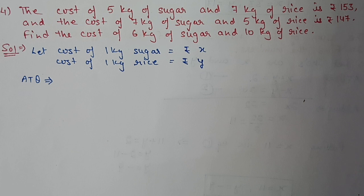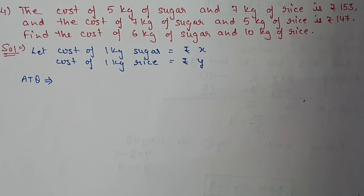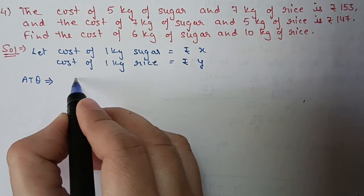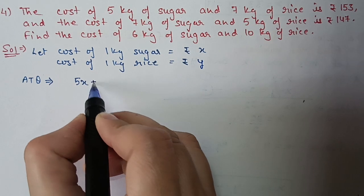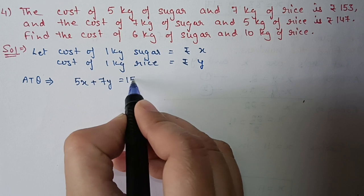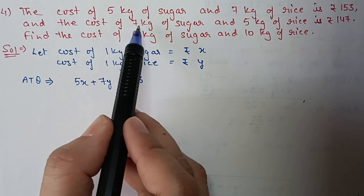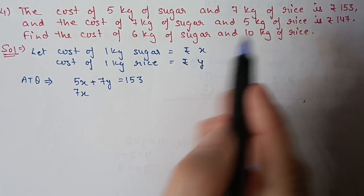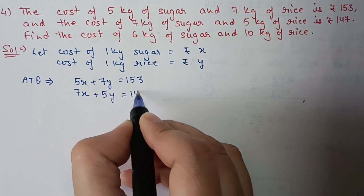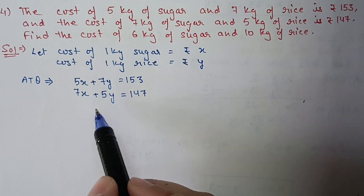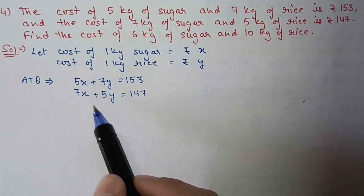Question 4: the cost of 5 kg of sugar and 7 kg of rice is 153 rupees, and the cost of 7 kg of sugar and 5 kg of rice is 147 rupees. Find the cost of 6 kg of sugar and 10 kg of rice. Let cost of 1 kg sugar = x rupees and cost of 1 kg rice = y rupees. Equation 1: 5x + 7y = 153. Equation 2: 7x + 5y = 147.